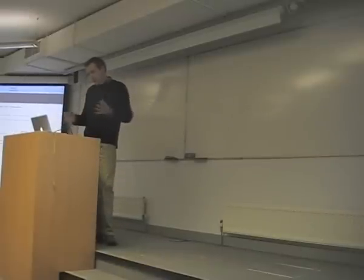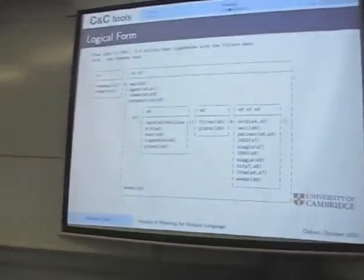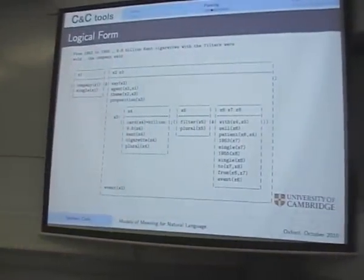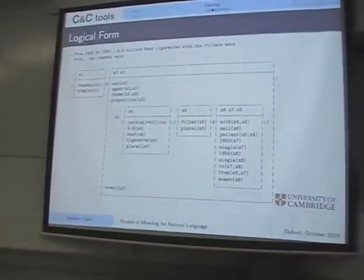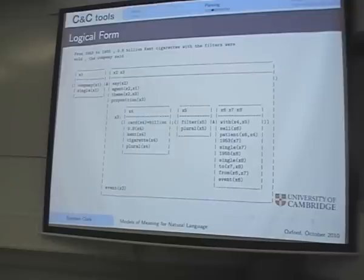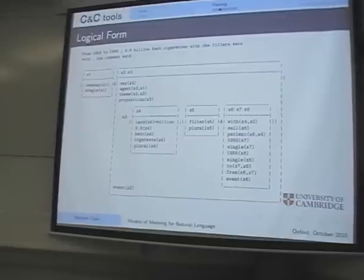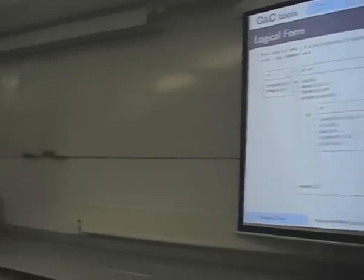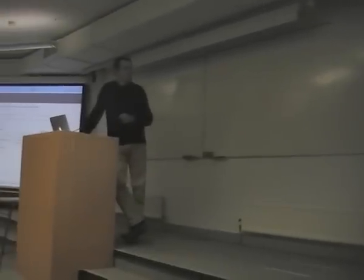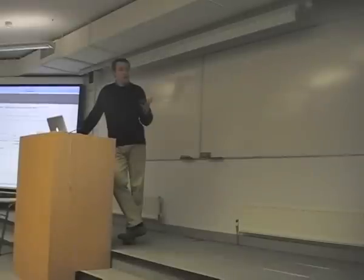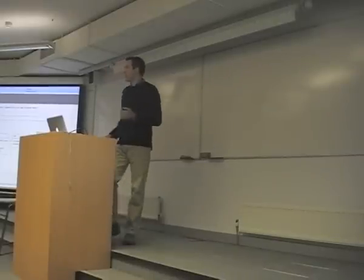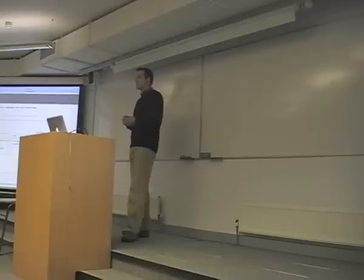If we're feeling really ambitious, we might try to derive something like a logical form — a semantic representation. This is actual output from the parser I'm about to describe: a pretty-print format of a discourse representation structure, which is essentially a first-order logical form. If you wanted to, you could send it off to a theorem prover and do all sorts of interesting things.